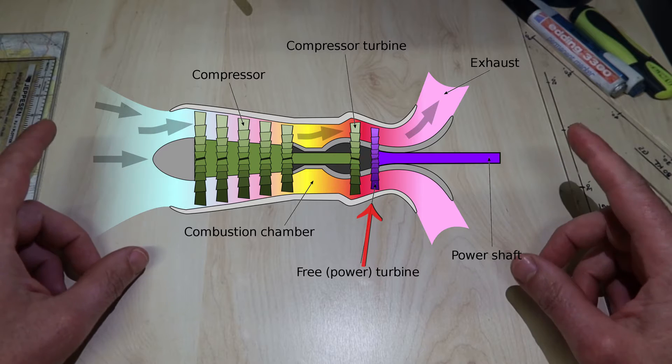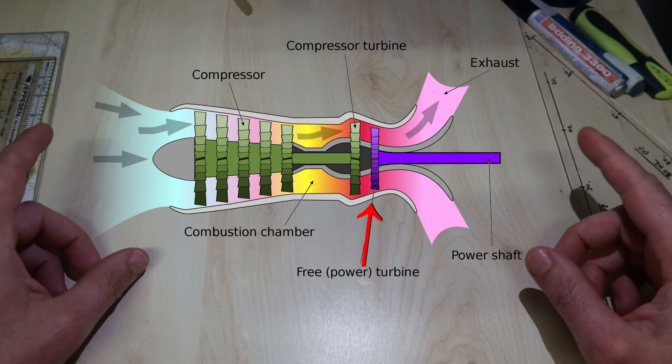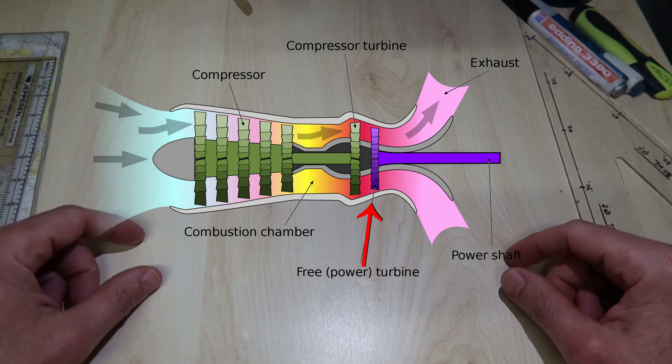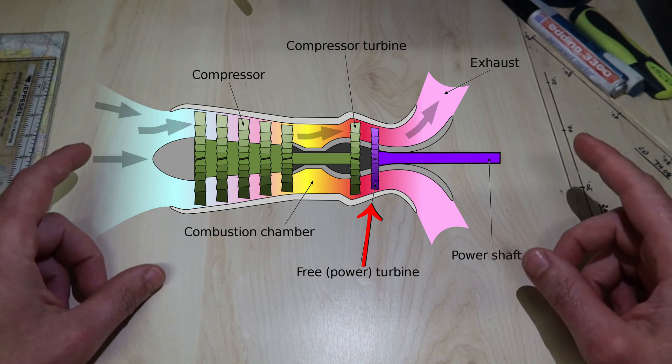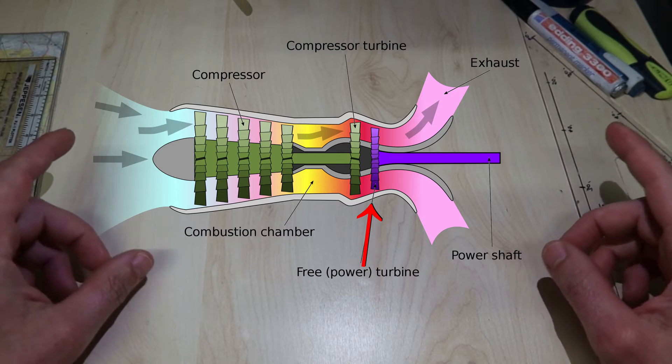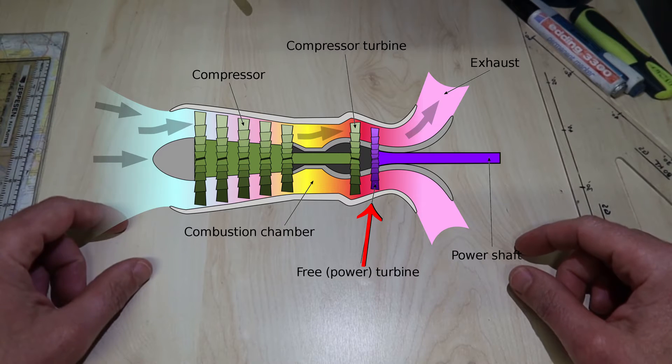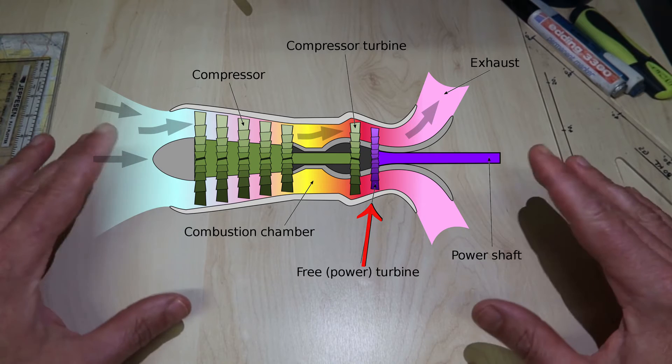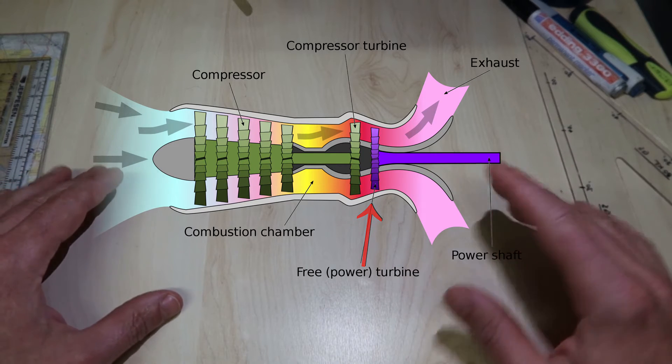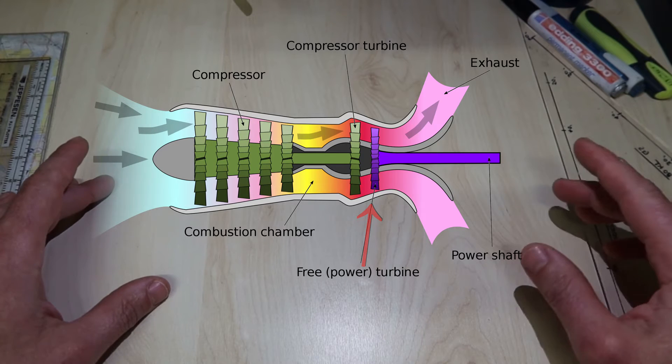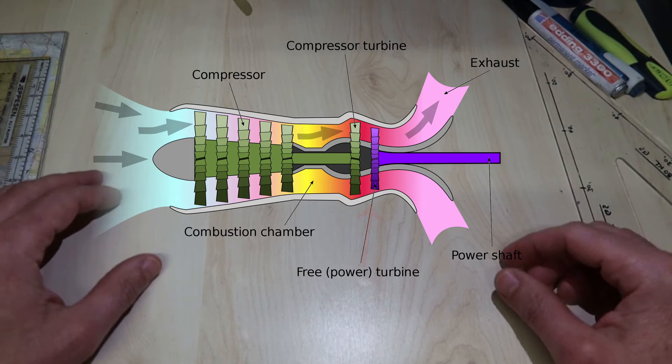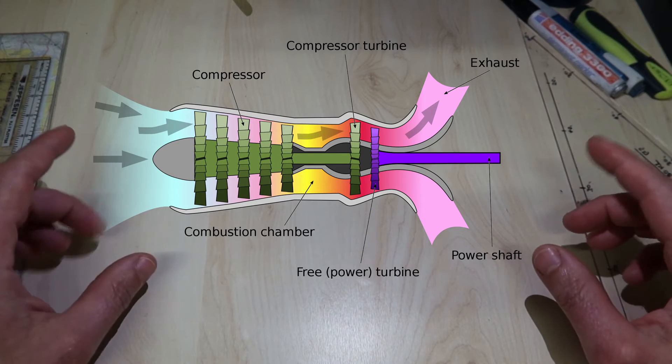The power turbine is not connected to the gas generator, hence the term free, and it is governor controlled to run at a near constant RPM. The power or torque it produces varies with the mass flow passing through the gas generator. This mass flow varies with air density and is controlled by changing the fuel flow into the engine.